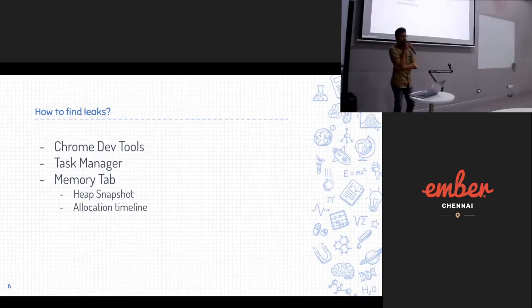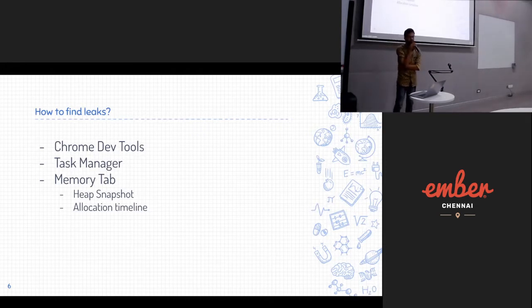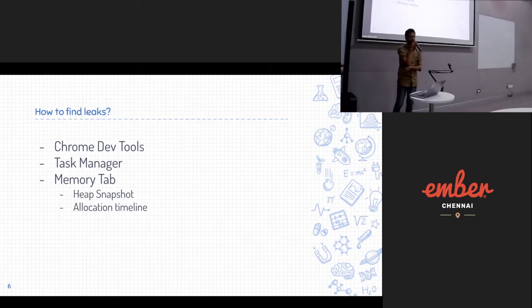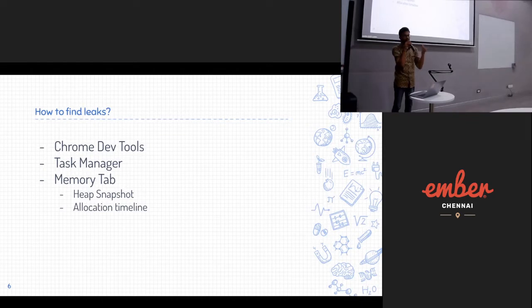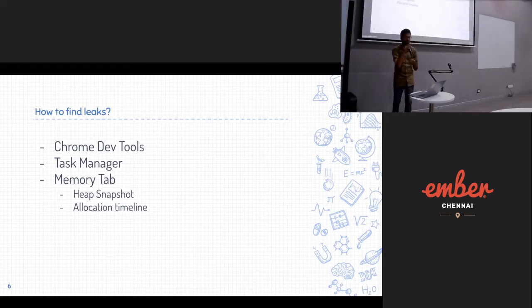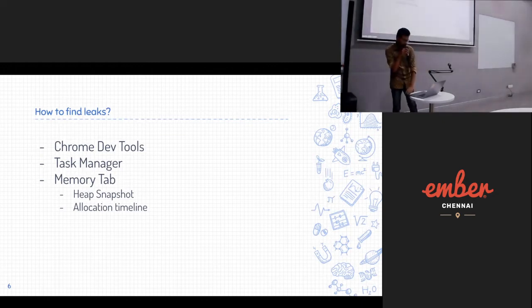So how do we find leaks? Chrome has some nice features for finding memory leaks. First, open Chrome's Task Manager — it shows all tabs with their JS heap size, memory, CPU, and other details. Watch carefully: if the JS heap size keeps increasing over time, you can suspect your app has memory leaks. You can then confirm by taking heap snapshots or recording an allocation timeline in Chrome DevTools' Memory tab.